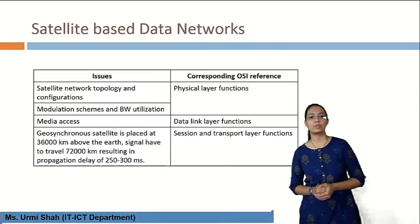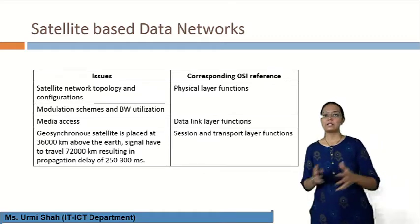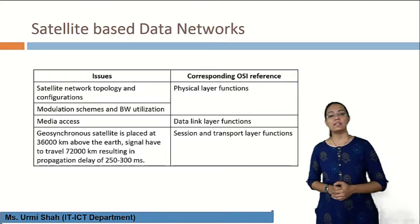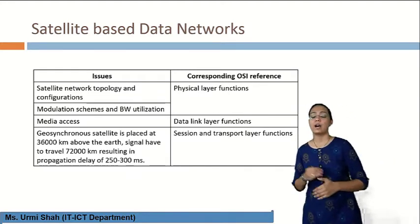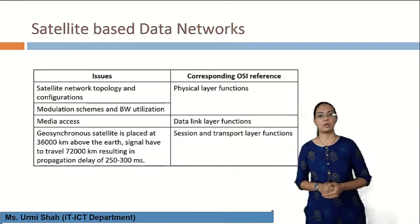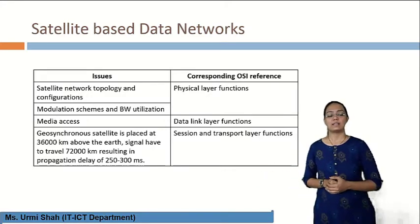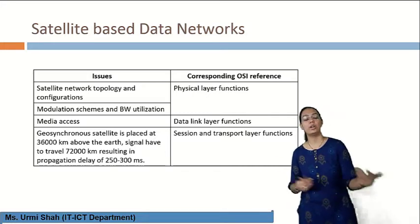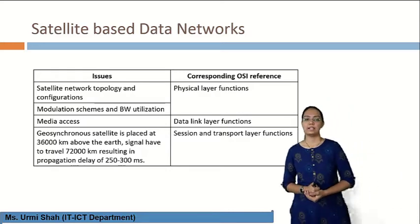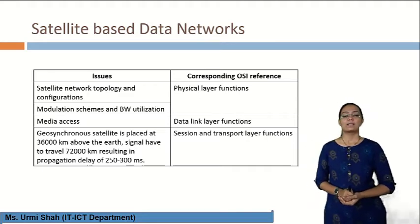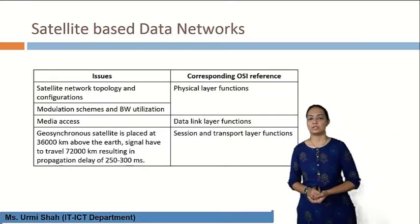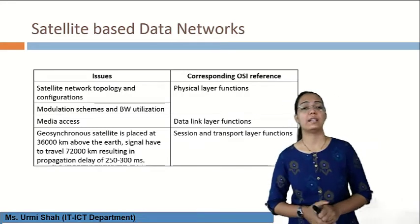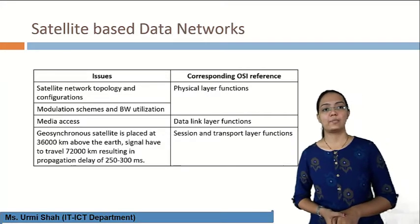The task of the session and transport layer is to transfer a signal from one place to another. The same role is assigned in satellite-based data networks — a geosynchronous satellite is placed at 36,000 km above the earth and signals travel 72,000 km, resulting in a propagation delay of 250 to 300 ms. The data link layer performs media access between layers regarding data, so media access issues are related to the data link layer. The physical layer includes satellite network topology, configuration, modulation schemes, and bandwidth utilization.